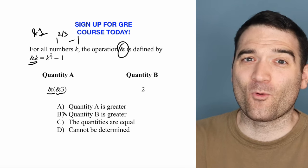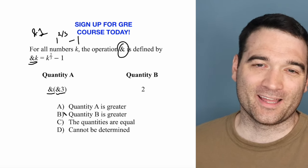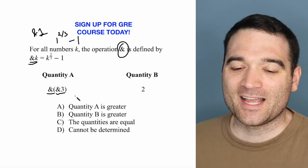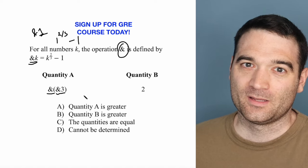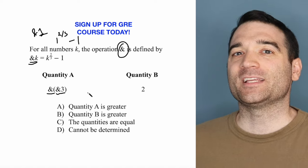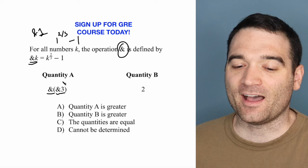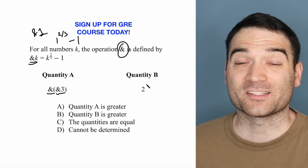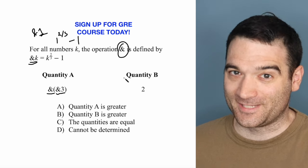But even more basically, the shortcut on this problem is to recognize that this is a quantitative comparison problem. You don't necessarily need to find the exact value. You just need to know if it's greater than or less than two. And there's a way to see that.